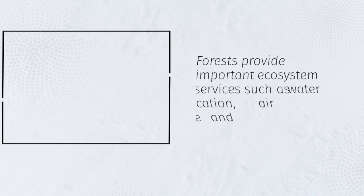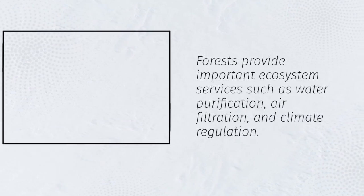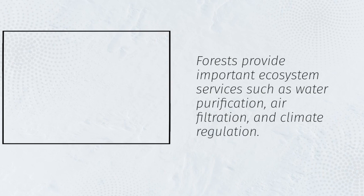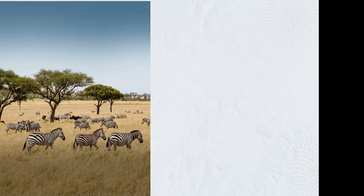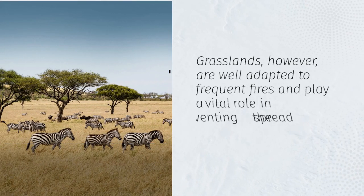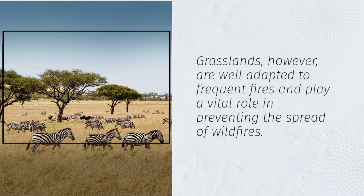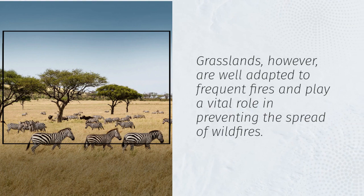Forests provide important ecosystem services such as water purification, air filtration, and climate regulation. Grasslands, however, are well adapted to frequent fires and play a vital role in preventing the spread of wildfires.